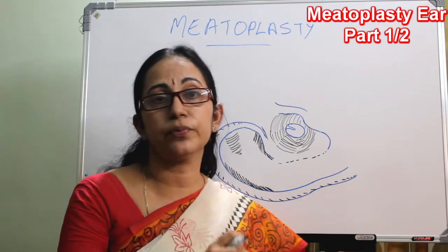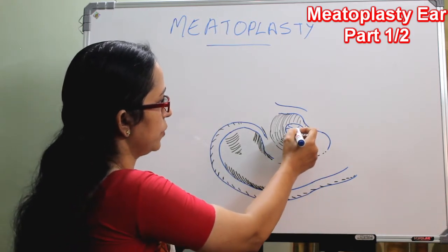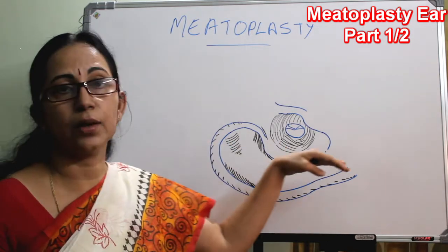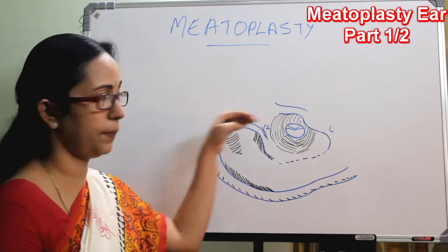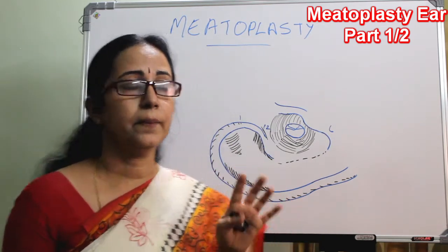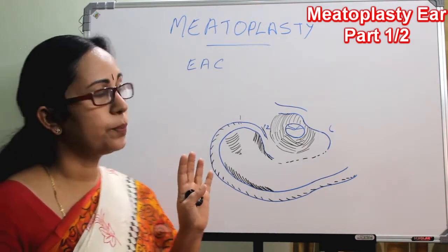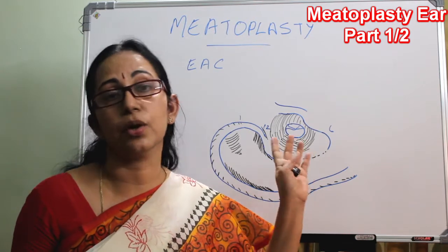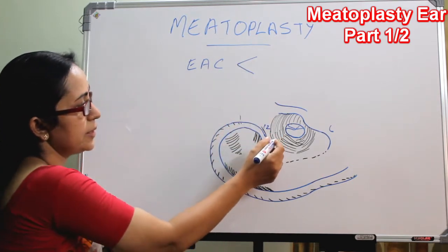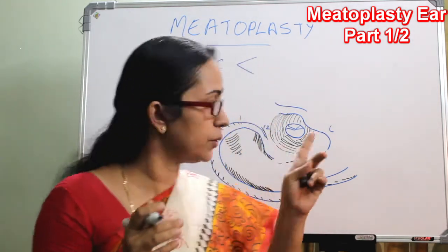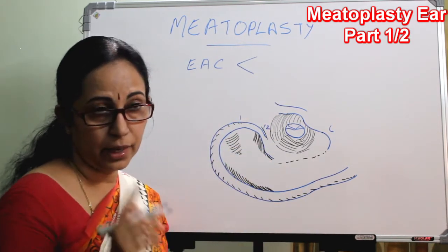This is a right pinna, external auditory canal, and tympanic membrane in a lying down posture, showing 12 o'clock and 6 o'clock positions. Meatoplasty — or canalplasty — refers to the plastic repair of the external auditory canal. The external auditory canal has two parts: one is the introitus, the opening seen between the tragus in front and the conchal cartilage.